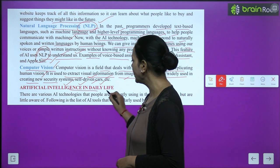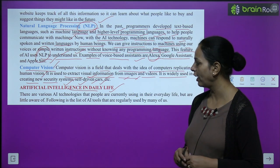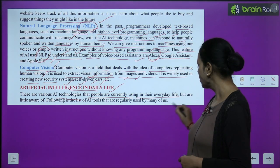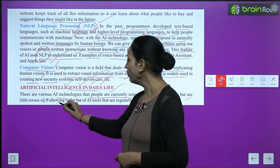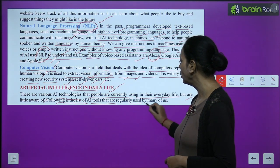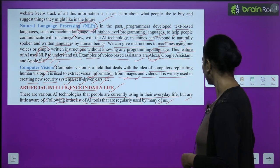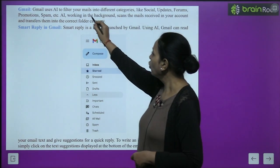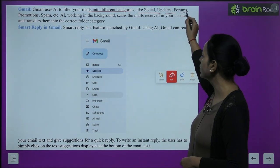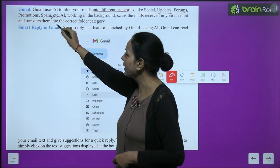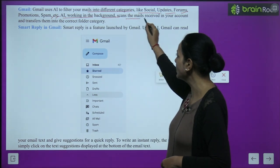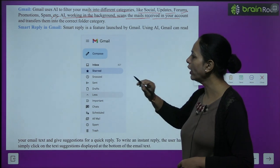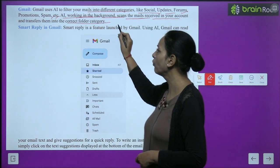Artificial Intelligence in daily life. There are various AI technologies that people currently use in their everyday life but are little aware of. Gmail uses AI to filter your mails into different categories like social, updates, forums, promotions, spam, etc. AI working in the background scans the mails received in your account and transfers them into the correct folder category.